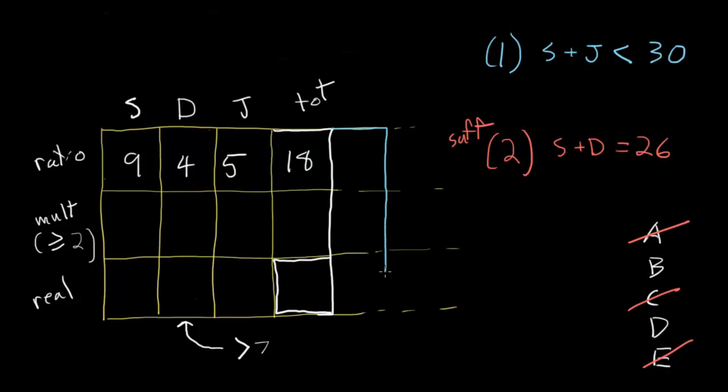I guess we can't just look at this instantly as we did with statement number 2 to know whether or not it's sufficient. Let's see if we can make deductions using the chart. Add a column for S plus J. And we know the actual value of S plus J needs to be less than 30. And what's our ratio value for S plus J? Well that's just 9 plus 5, 14. Can we make deductions about our multiplier based on this? Well we already know that it can't be 1, because we figured from the stem that we need a multiplier greater than or equal to 2. So we can't have 1. Could it be 2? Sure. 14 times 2 is 28, and that's less than 30, so it's allowed.